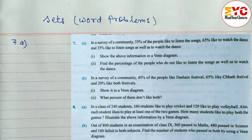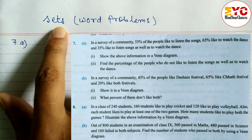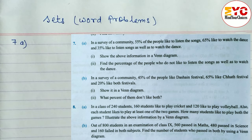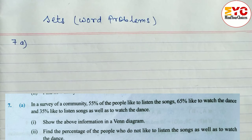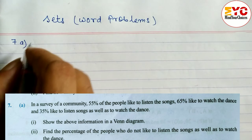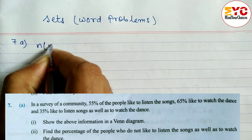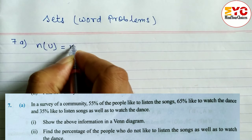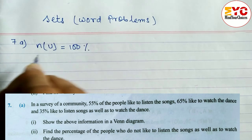Hello everyone, today in this video we are going to learn about problems related to sets. Look at question number 7: in a survey of a community, 55 percent of people like to listen to a song, 65 percent like to watch a dance, and 35 percent like both. Since the question is in the form of percentage, we take n(U) equal to 100 percent.